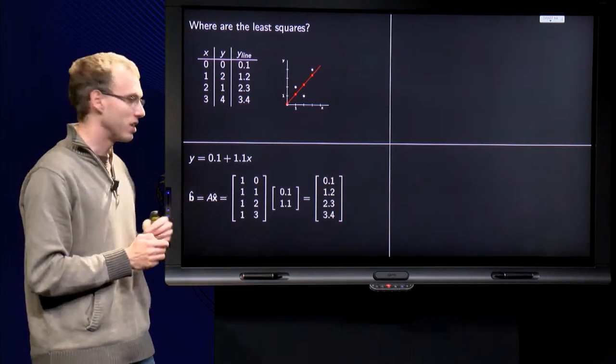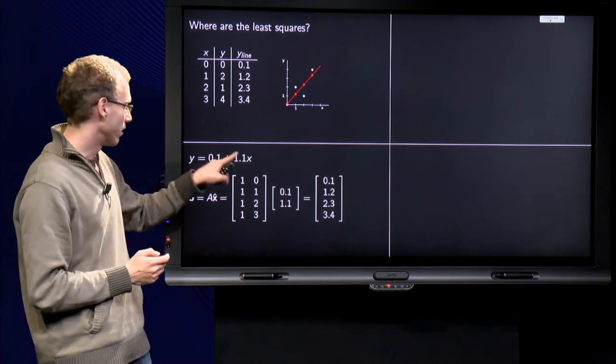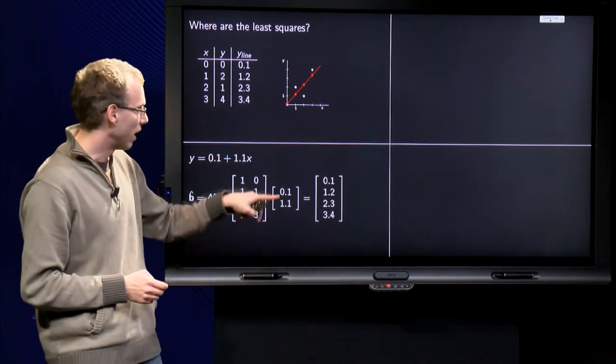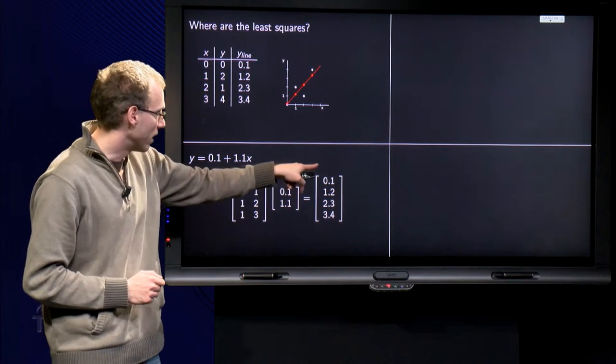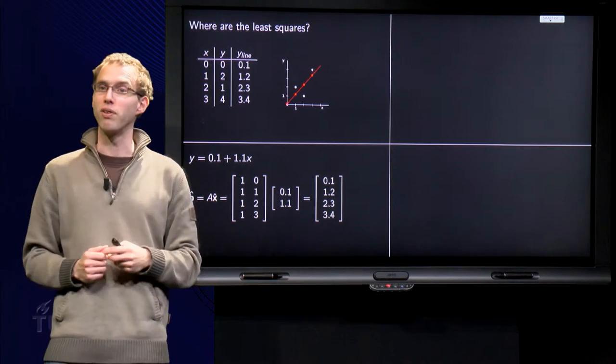Well b hat equals A times x hat, with our matrix A as before we have computed our x hat, and here we have our b hat: 0.1, 1.2, 2.3, 3.4.